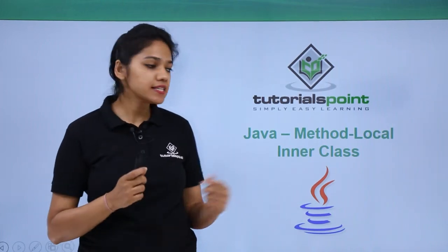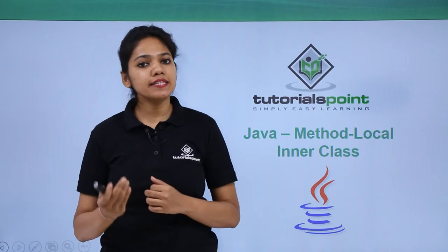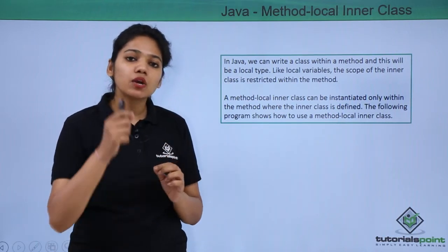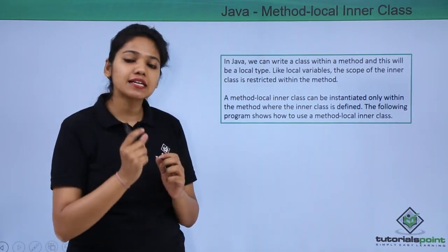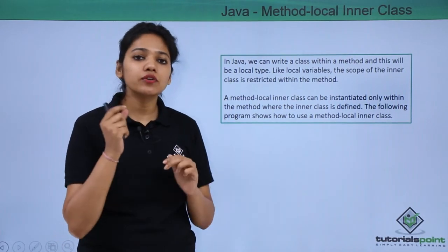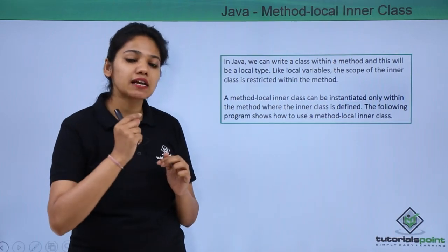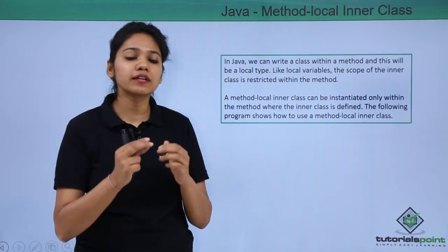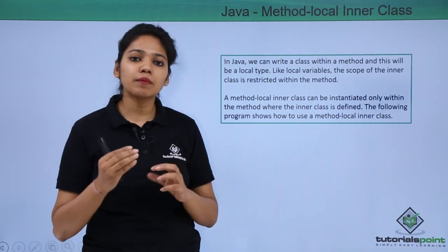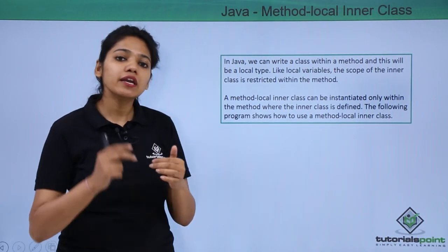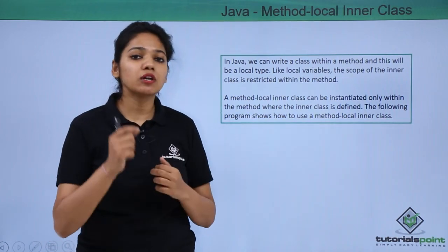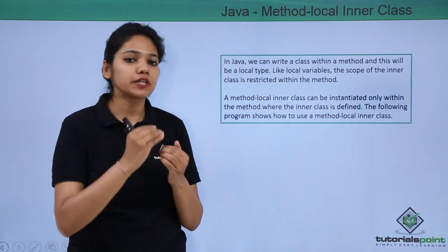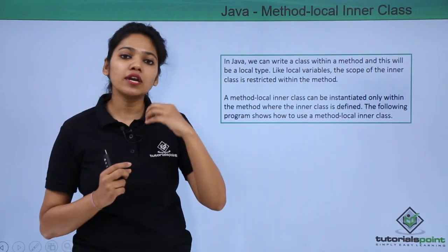Another type of nested inner class is the method local inner class. A method local inner class is one where you define an inner class inside a method of your outer class. When you declare an inner class inside a method, it becomes a local class — similar to a local variable. Its scope is limited to that particular method and cannot be accessed outside.